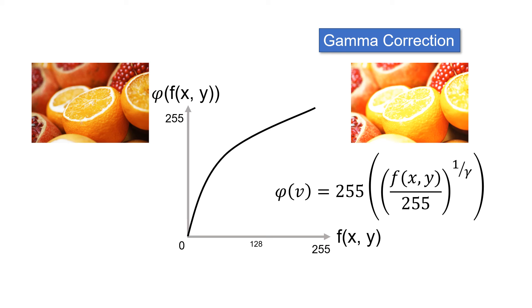For values of gamma greater than one, for example 2.8, you get a brighter image. For values between zero and one, you get a darker image. The equation can be applied to each color value to get a new color image.